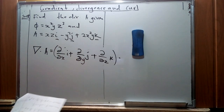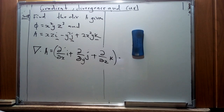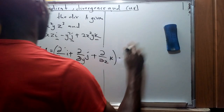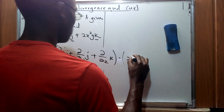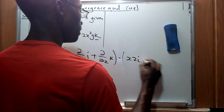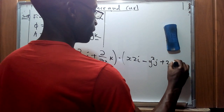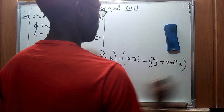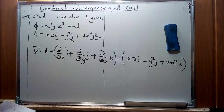For the components of vector A, we represent them using the given vector, which is xz **i** minus y squared **j** plus 2x squared **k**. The dot product of those specific factors will give us a scalar.